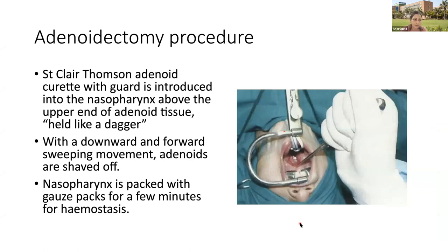Adenoidectomy is commonly performed using the St. Clair Thomson adenoid curette, which is introduced into the nasopharynx above the upper end of the adenoid tissue and held like a dagger. The upper limit of the adenoid is reached, then it is scraped off the nasopharynx with a downward and forward sweeping movement. The nasopharynx is then packed with gauze pieces for a few minutes to achieve hemostasis.